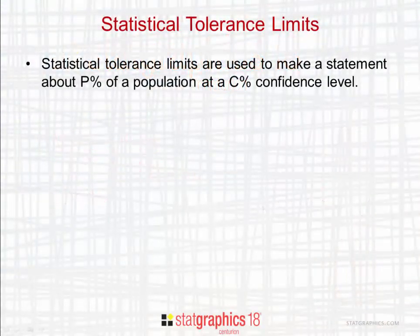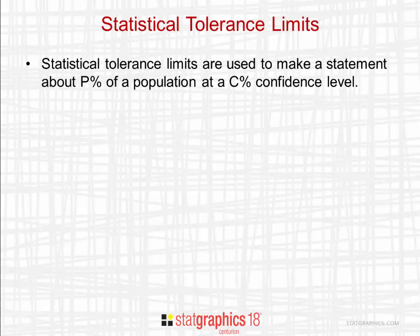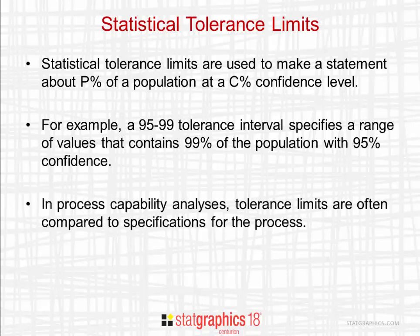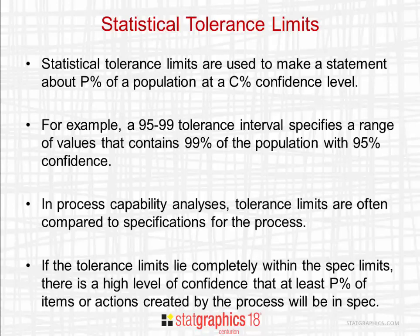Statistical tolerance limits are used to make a statement about P% of a population at a C% confidence level. For example, a 95-99 tolerance interval specifies a range of values that contains 99% of the population with 95% confidence. In process capability analyses, tolerance limits are often compared to specifications for the process. If the tolerance limits lie completely within the spec limits, there's a high level of confidence that at least P% of the items or actions created by the process will be in spec.